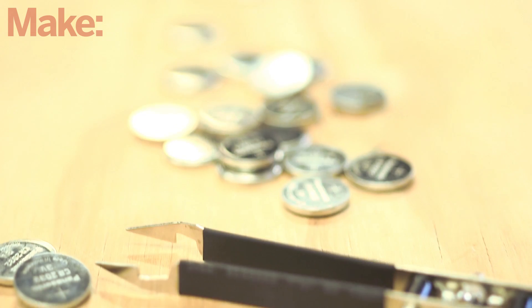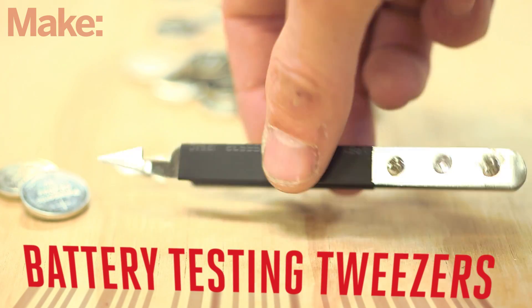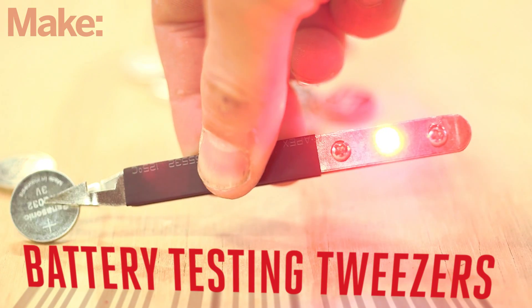That's where Shawn Michael Reagan's battery testing tweezers come in. All you have to do is squeeze the battery in question to reveal its polarity and the charged state.